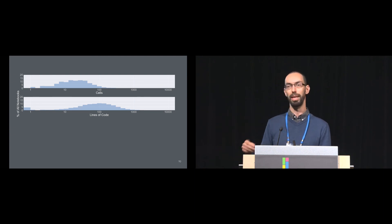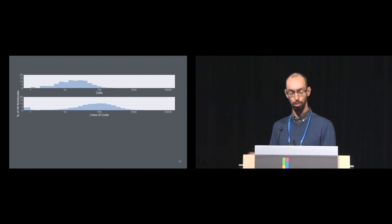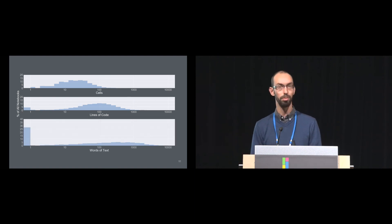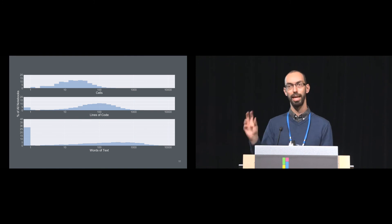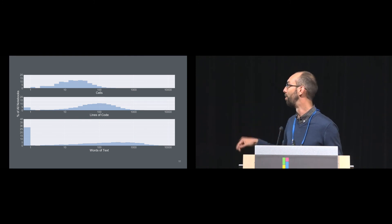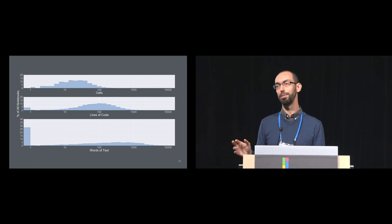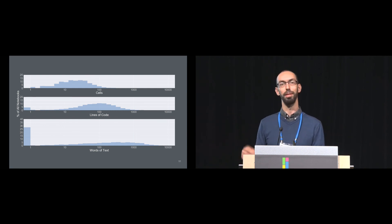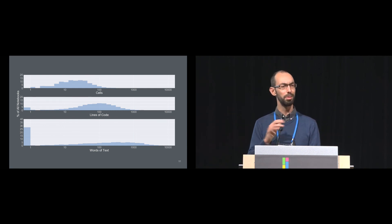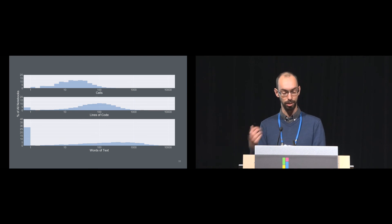When we look at the number of words of text — that narrative description — we get a much different picture. There's still some of the log-normal shape, but there's a really large bump to the left. About 27 percent of all notebooks publicly available on GitHub had no text whatsoever describing what was going on. This was our first hint that maybe these aren't being used for rich computational narrative like we might expect, at least not in all cases.